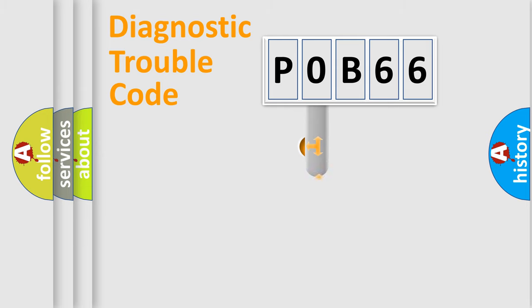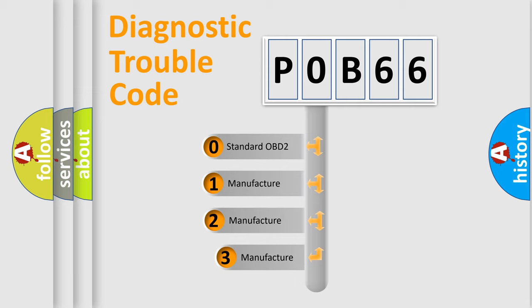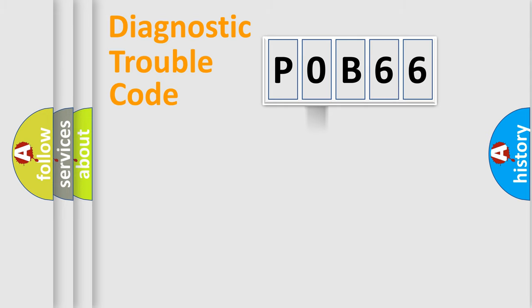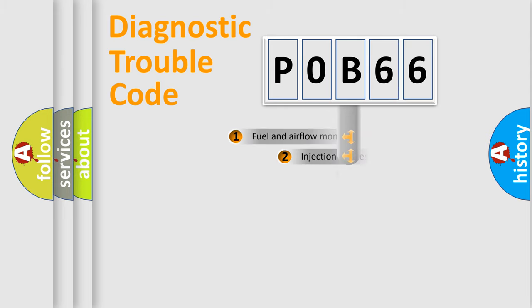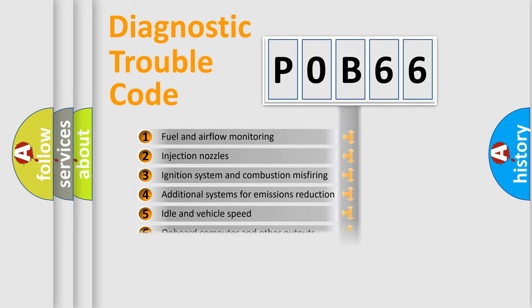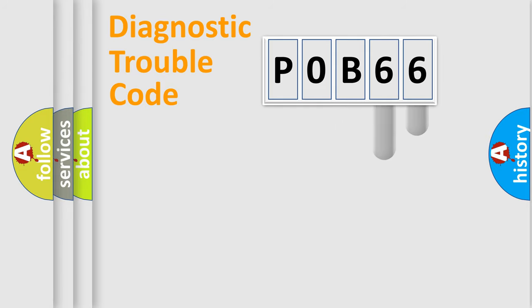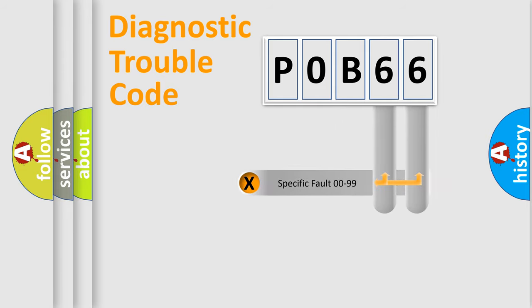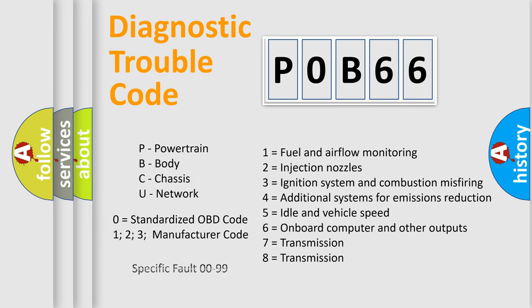This distribution is defined in the first character of the code. If the second character is expressed as zero, it is a standardized error. In the case of numbers 1, 2, or 3, it is a manufacturer-specific error. The third character specifies a subset of errors. This distribution is valid only for the standardized DTC code. Only the last two characters define the specific fault of the group, and this division is valid only when the second character is zero.